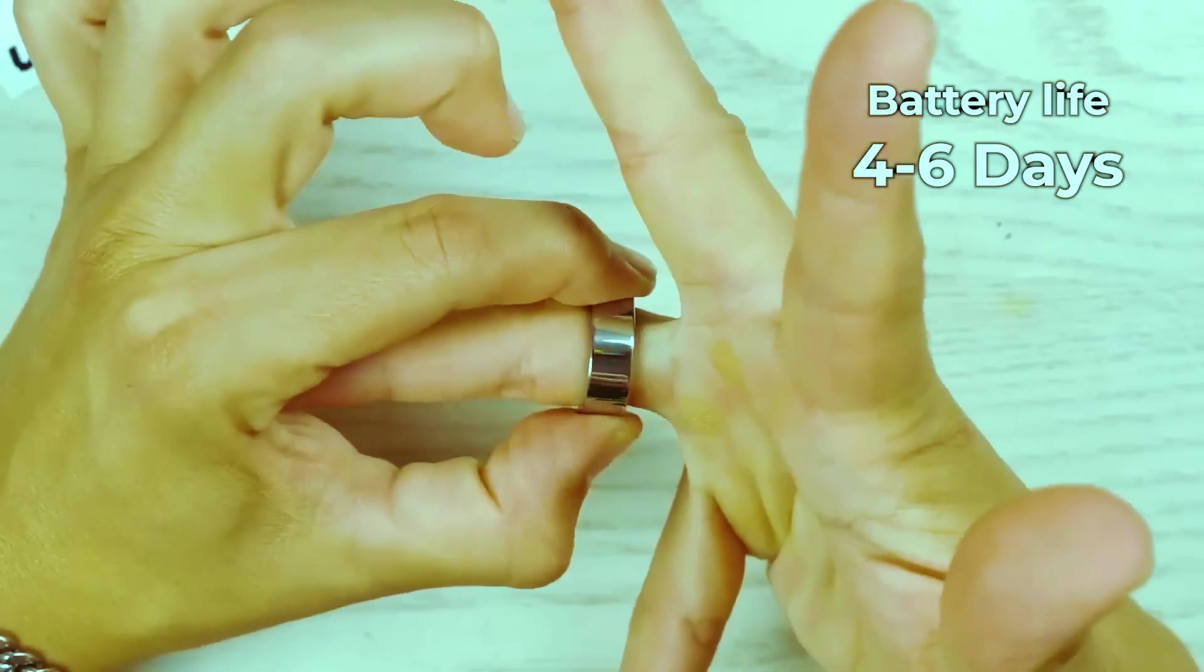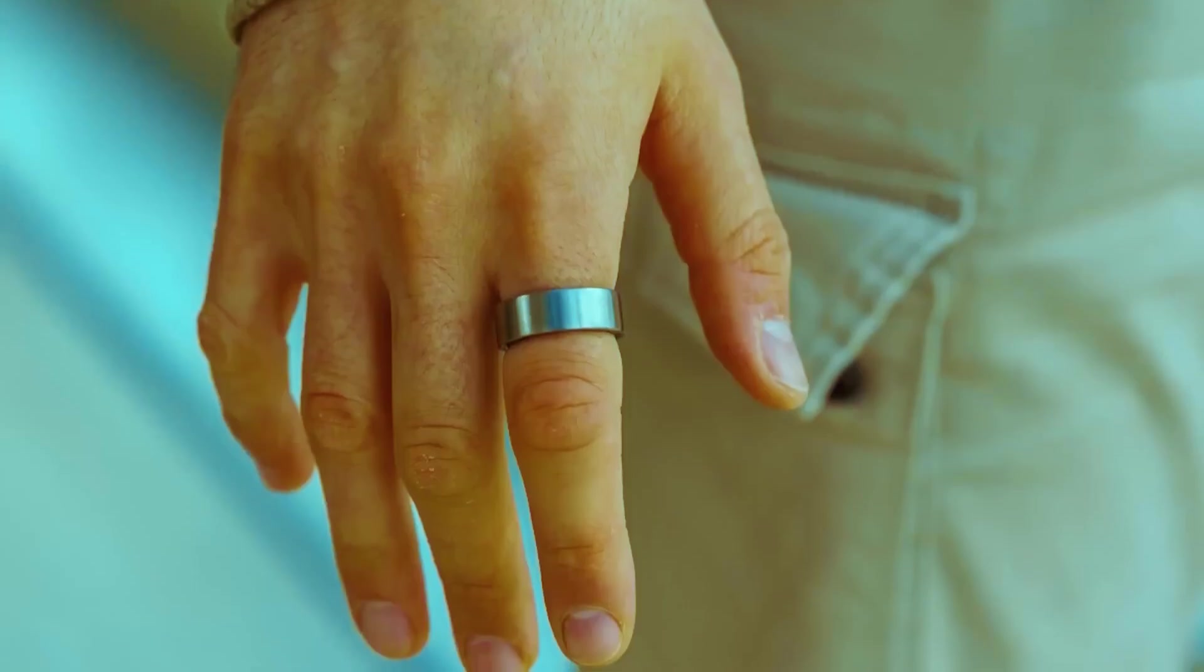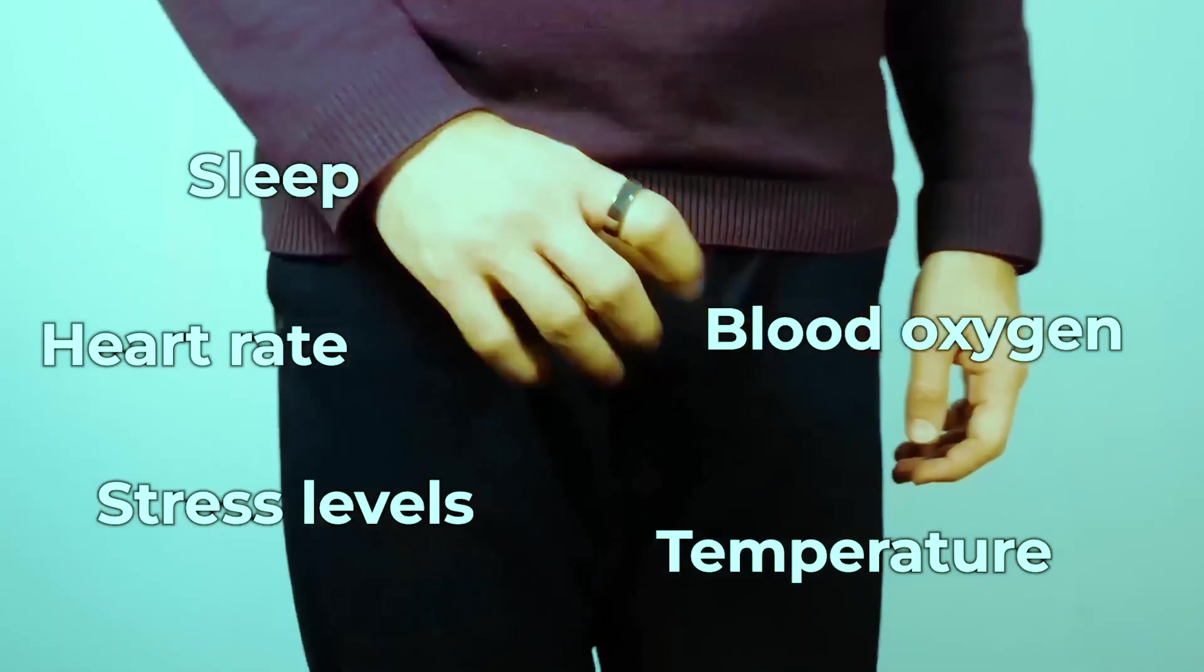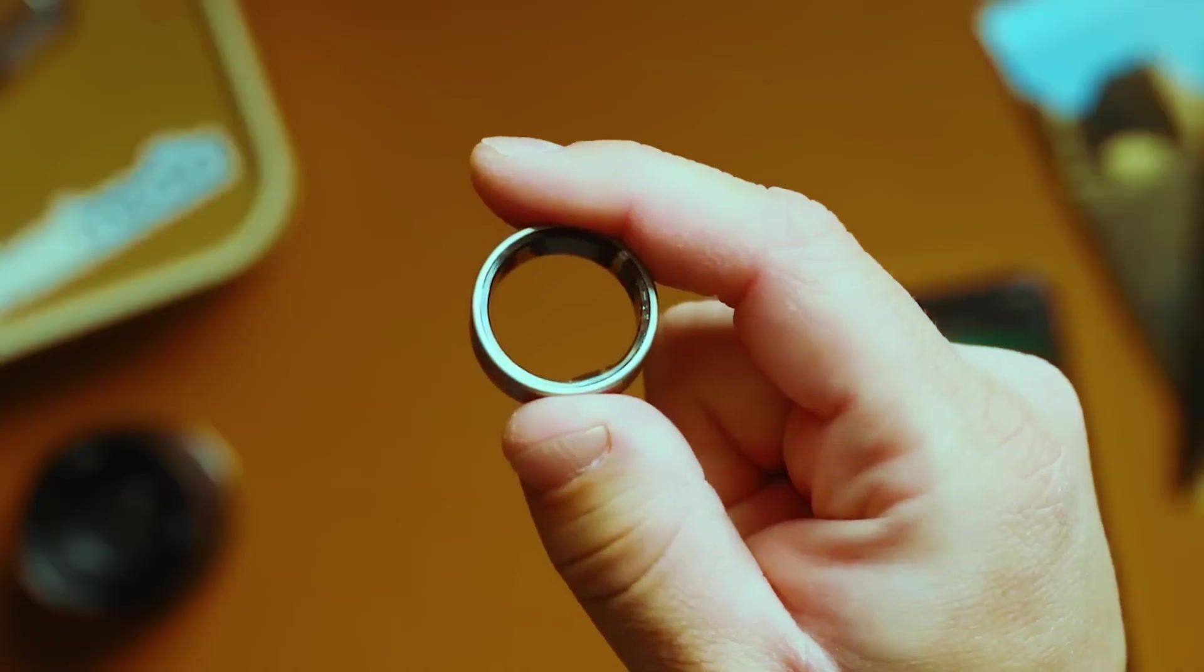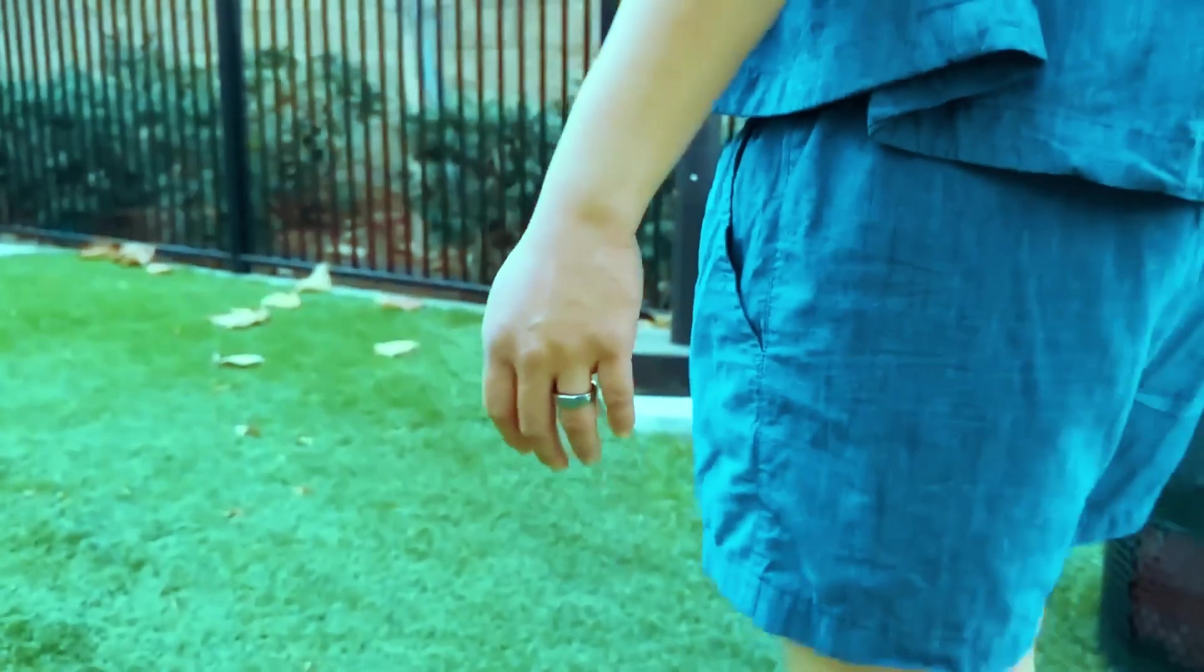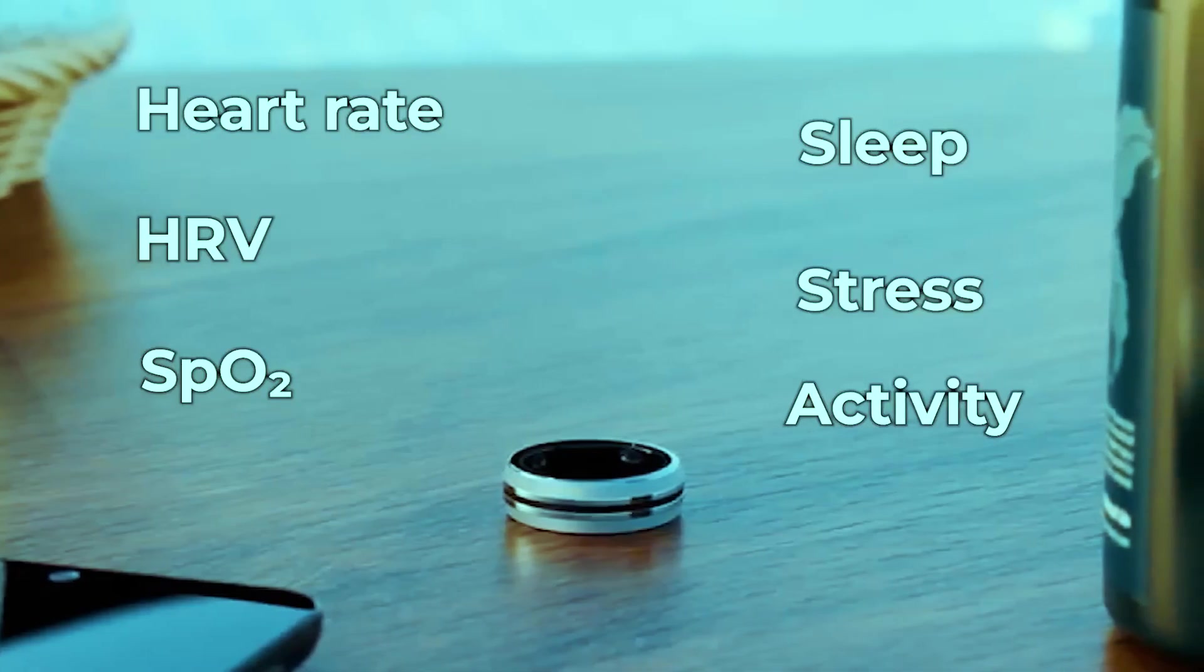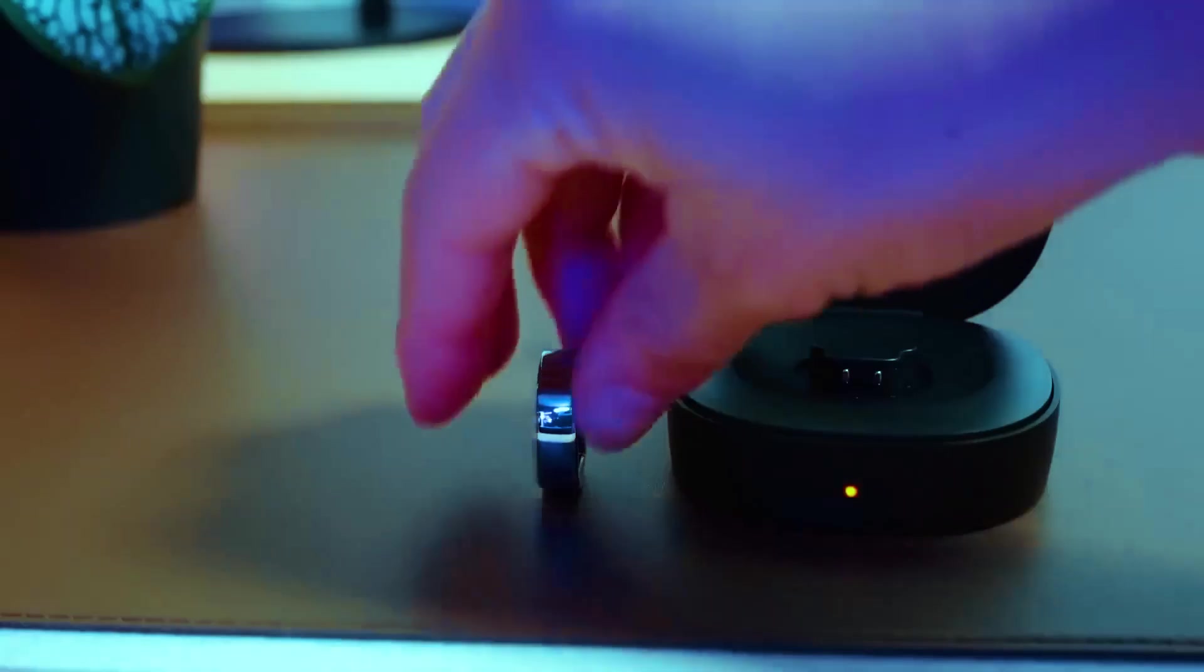The smart ring has saved lives, altered behavior, and shaped society in ways no one predicted. But in the end, the story leaves a haunting question: the greatest danger may not be illness or even the machine itself, but the ease with which humans surrender their autonomy to technology. Humanity must choose, and that choice will define the future of health, freedom, and trust in an age where machines know more than we ever thought possible.